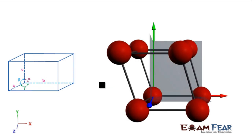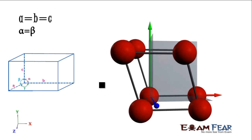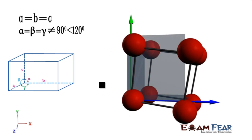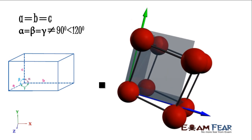The last one is simple trigonal (rhombohedral). In this case, all the sides are equal, but all the angles are not equal to 90 degrees — they are less than 120 degrees. All the angles are equal to each other (alpha equals beta equals gamma) but not equal to 90 degrees. This is almost like a deformed cube — pushed from one side. There is only one possible option: the simple one.